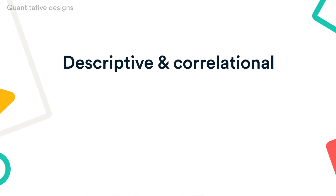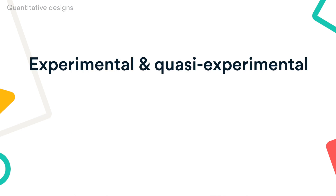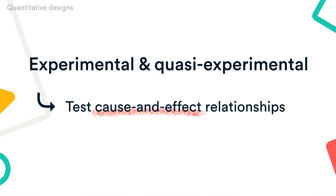Quantitative designs can be split into two main categories. Descriptive and correlational designs aim to measure variables and understand relationships between them, while experimental and quasi-experimental designs are best for testing cause-and-effect relationships.